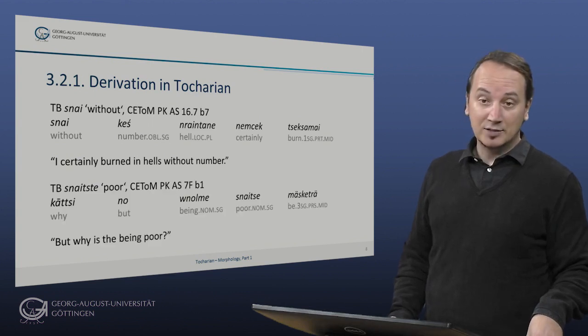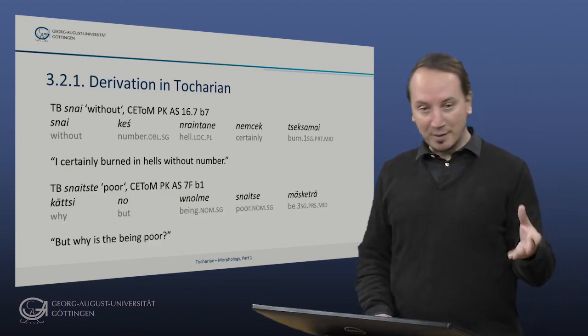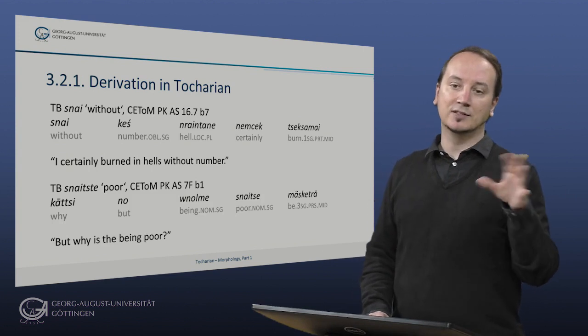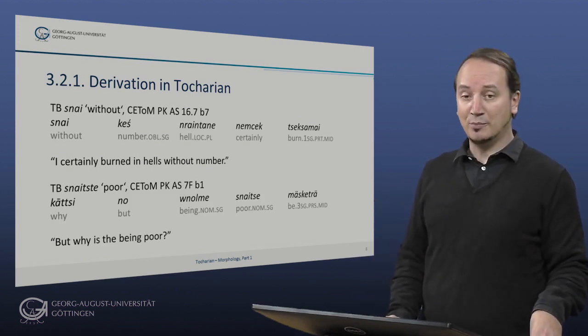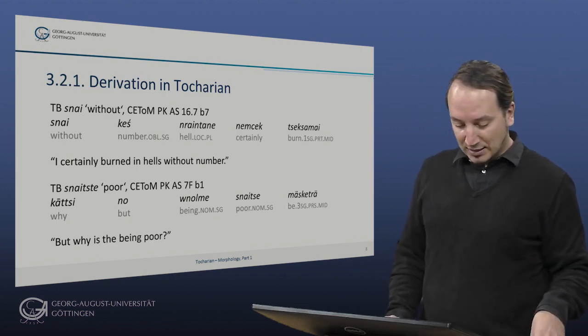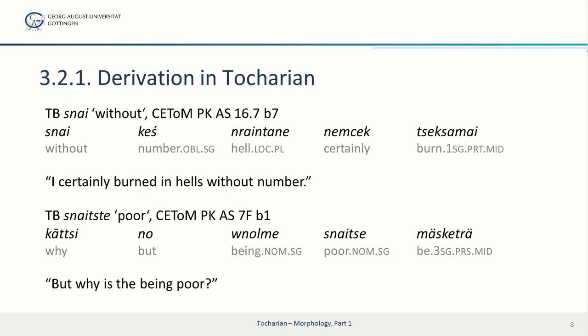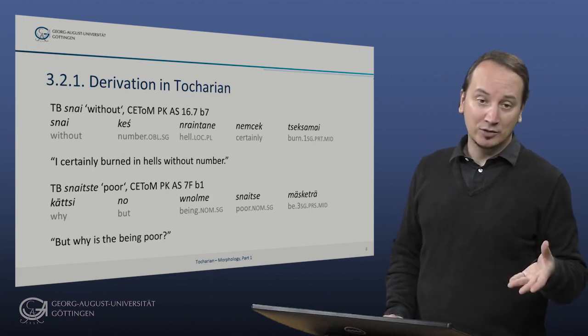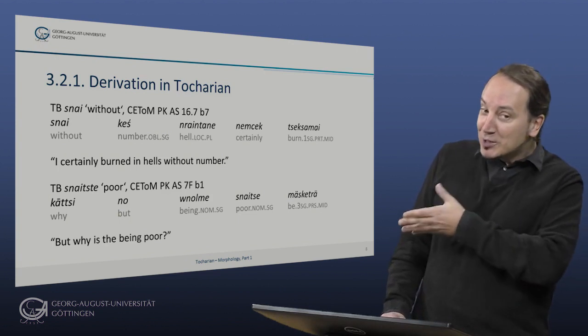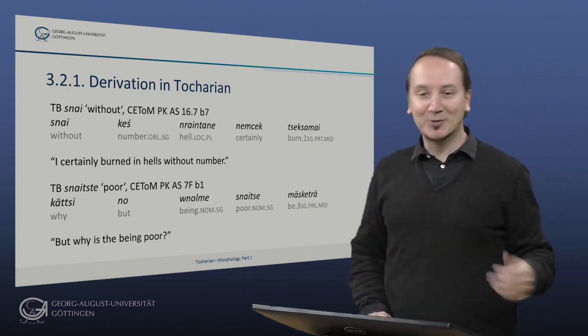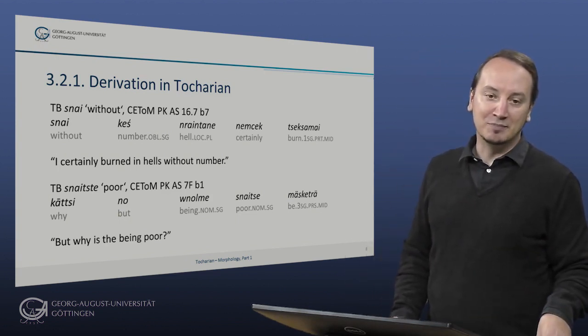The next passage is from the Karma Vibanga — the classification of acts dealing with consequences of good and evil deeds for future births in the Buddhist tradition: 'katsino vnolme sneitze muskentür' — 'why is the being poor?' Here 'sneitze' is an adjective meaning something like 'without-ish' or 'withouti', and it agrees with 'vnolme' meaning 'being'.